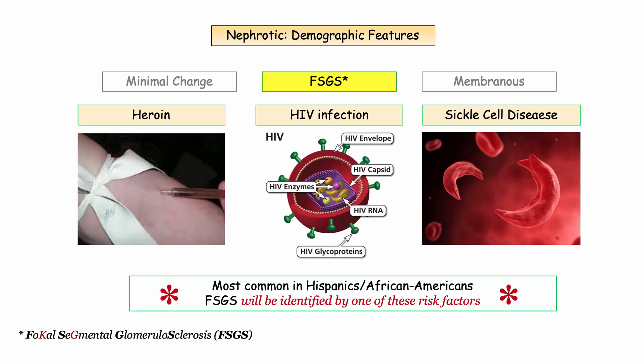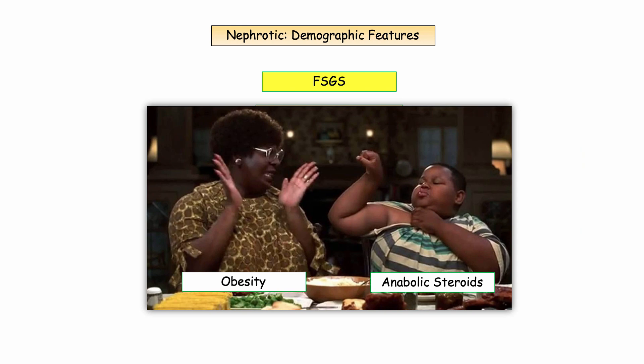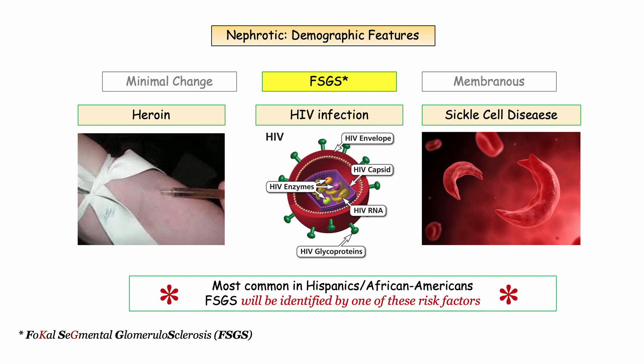The important associations with focal segmental glomerulosclerosis include IV heroin use, HIV infection, and sickle cell disease. There is a primary form without a known trigger, but other associations include obesity and anabolic steroid use. In questions on focal segmental, these associations will be vital in determining the correct answer.